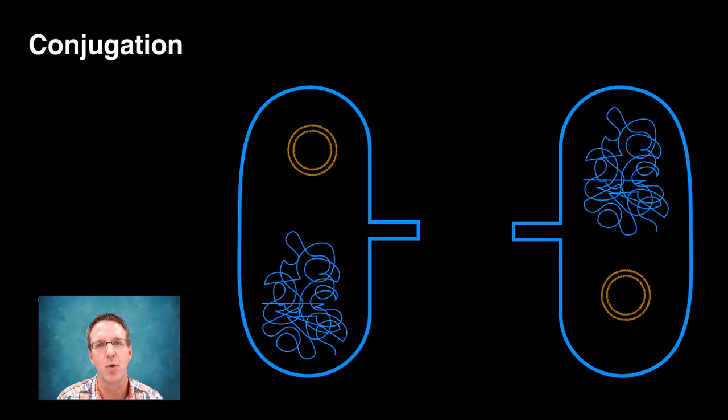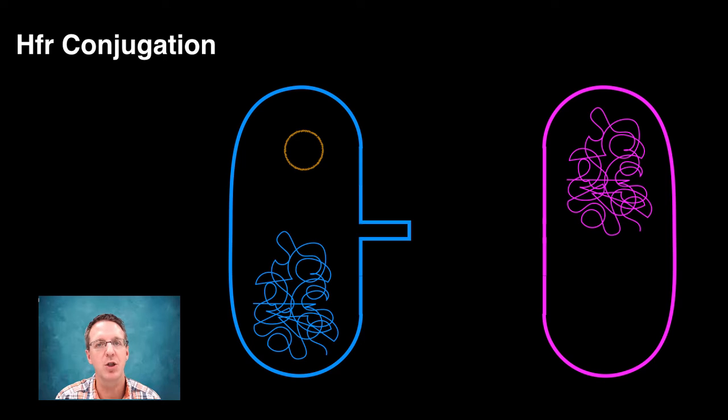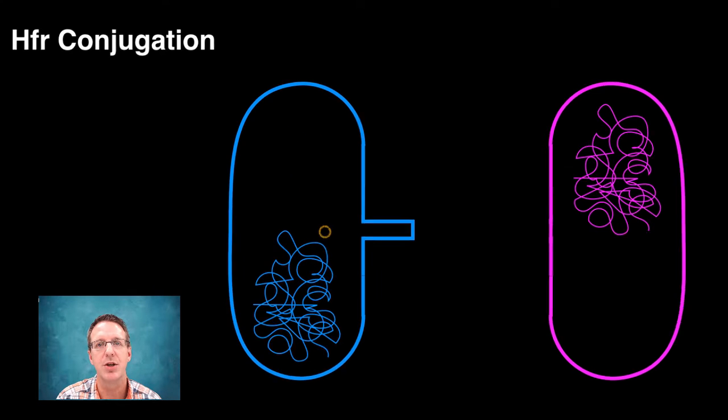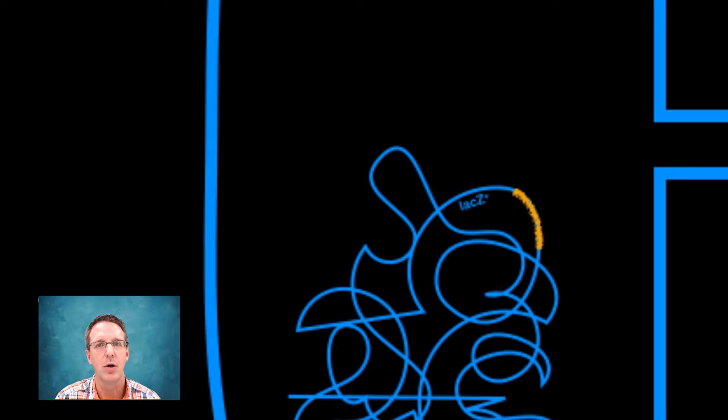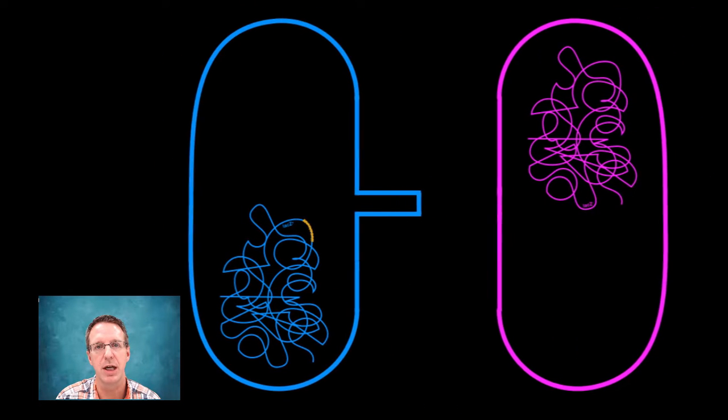The reason why this is important is because of a special kind of conjugation called HFR, or high-frequency recombination conjugation. Now, that's quite a mouthful, but how does it work? To start with, sometimes the F-plasmid gets integrated into the bacterial chromosome.